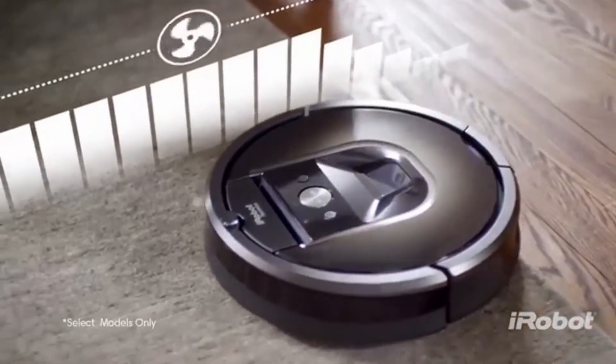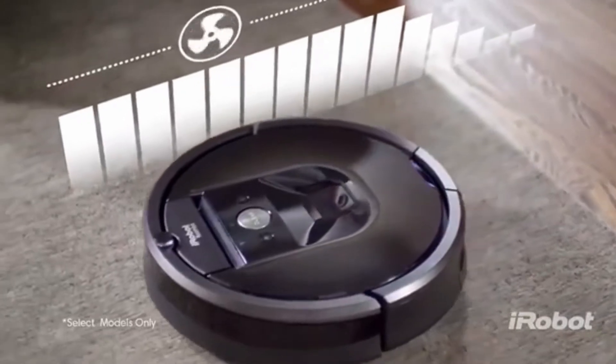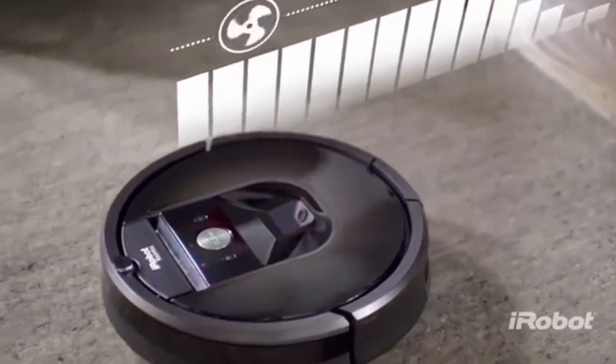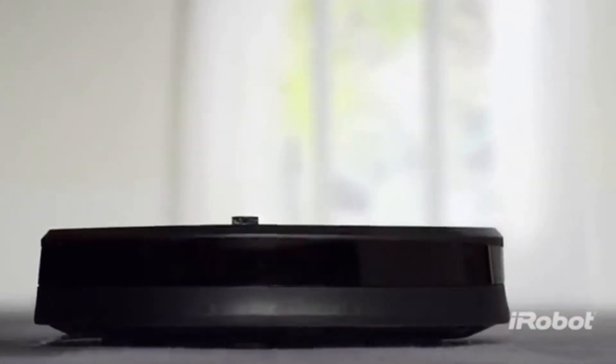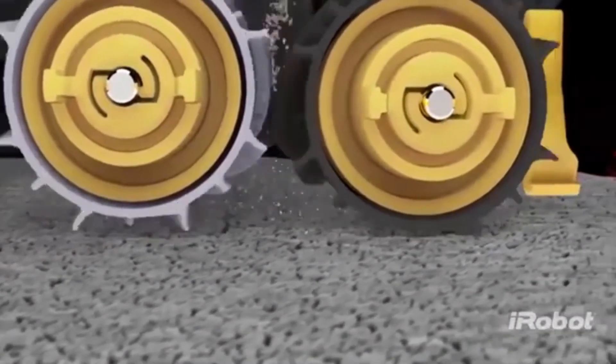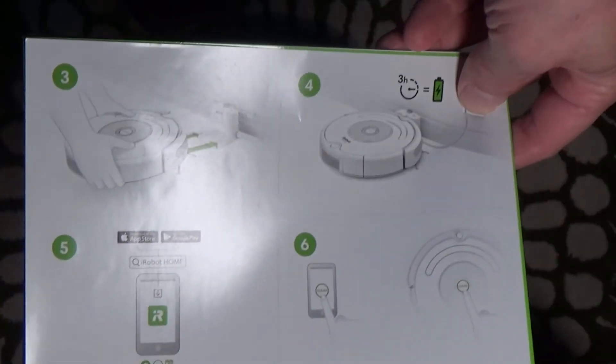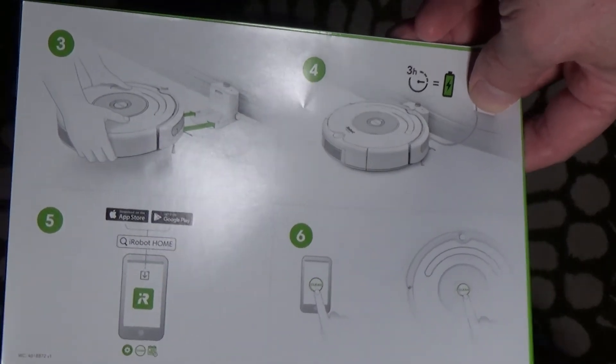You will still want to use the iRobot app to monitor battery power, filters, and things like that. Alright, now you are set up to use voice commands for your Roomba.